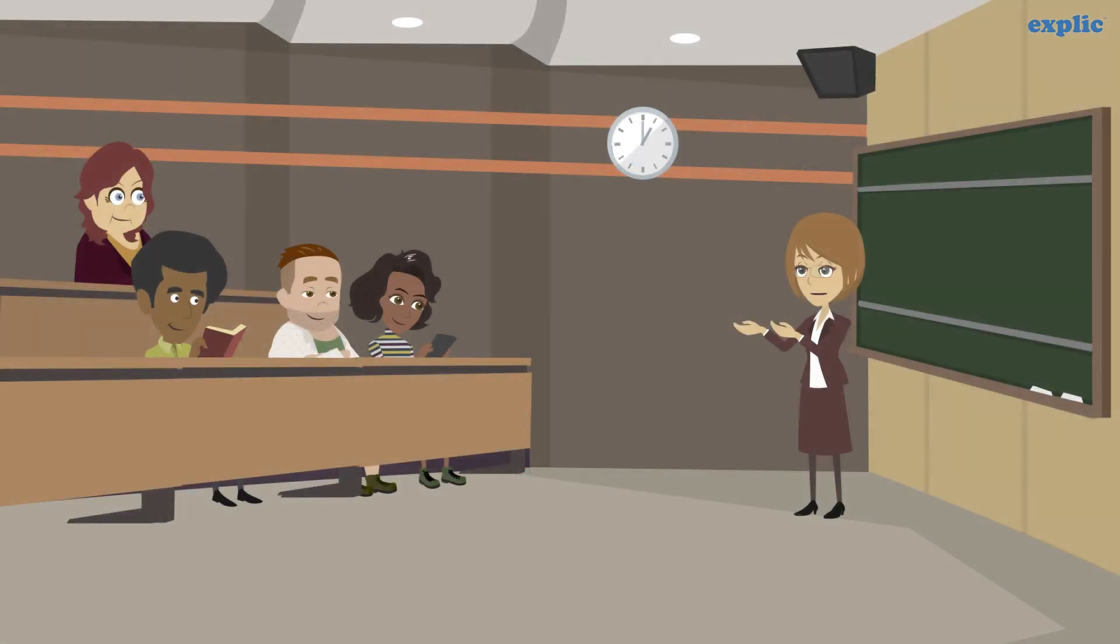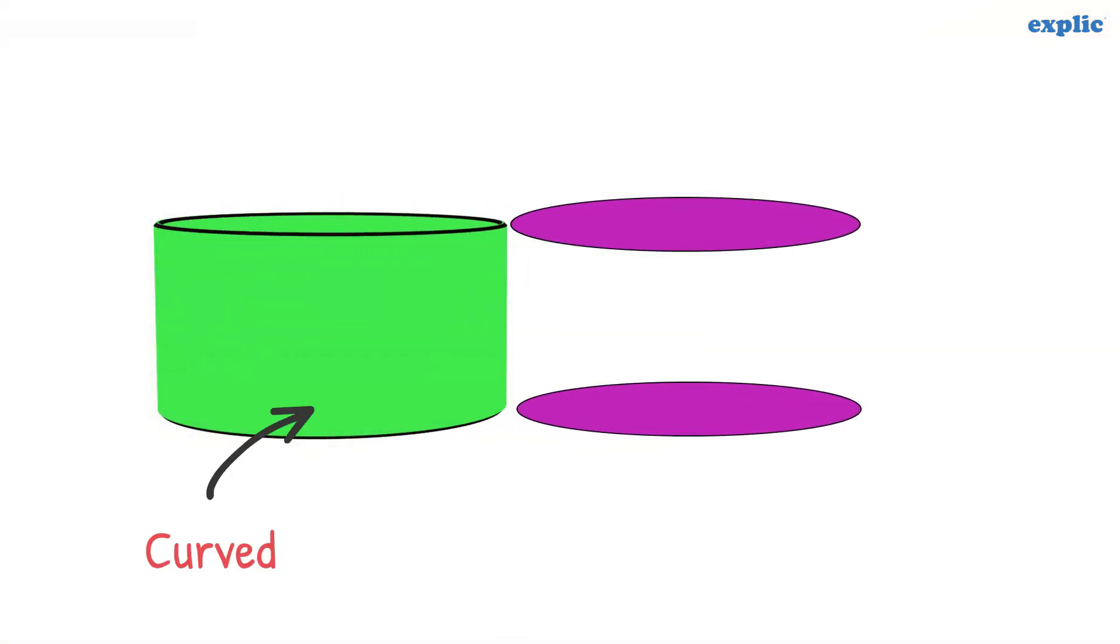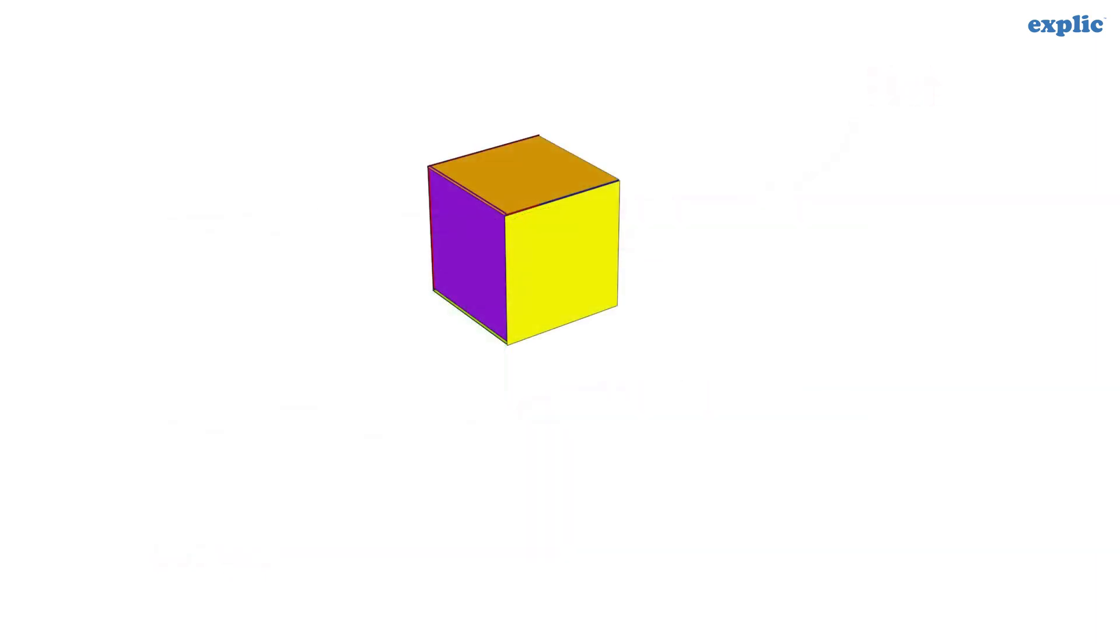A solid shape can be made of flat surfaces and curved surfaces. For example, a cylinder is made of curved and flat surfaces. But a cube or cuboid is made of only flat surfaces.